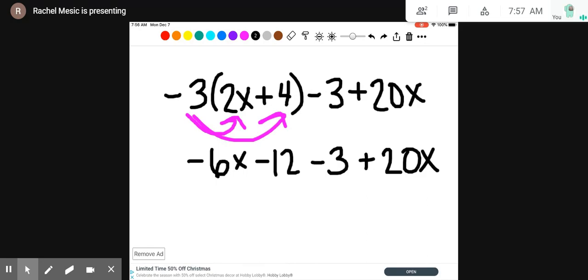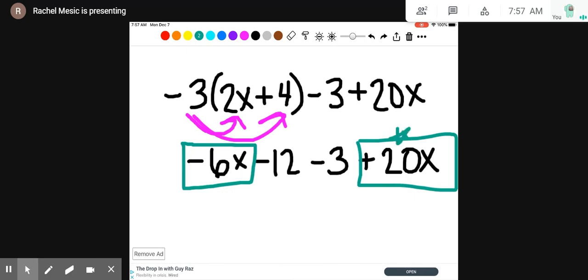Let's combine our terms with variables first. Negative 6x plus 20x. If they play tug of war, the positive team is going to win because they have more players. How many more? 20 minus 6 is 14. They have 14 more players. So 14x.